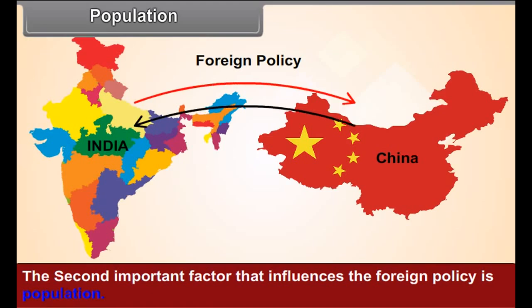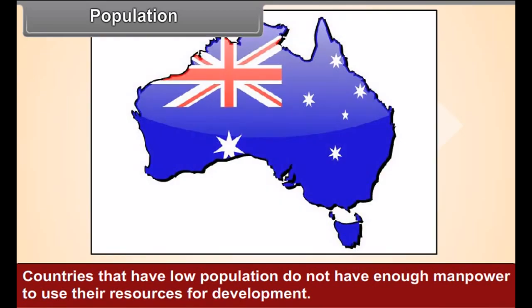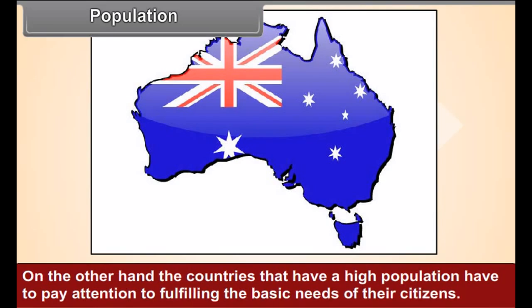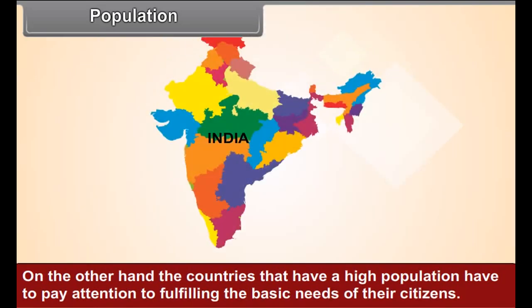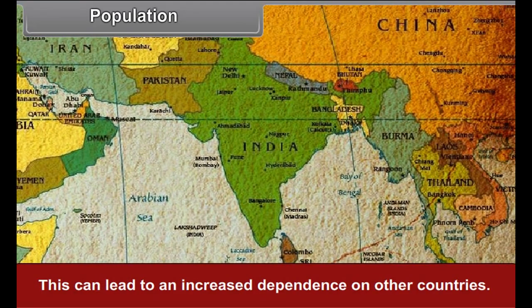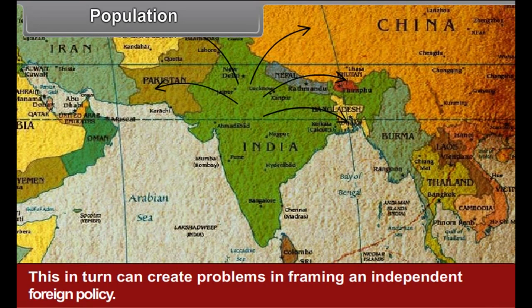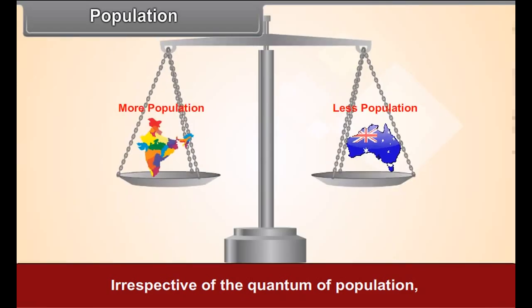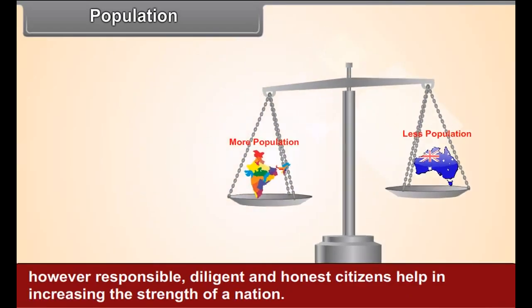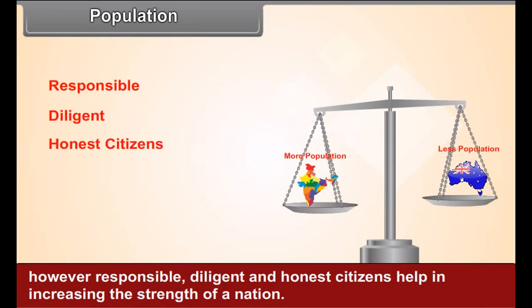Population: The second important factor that influences the foreign policy is population. Countries that have a low population do not have enough manpower to use their resources for development. On the other hand, countries that have a high population have to pay attention to fulfilling the basic needs of their citizens. This can lead to an increased dependence on other countries, which in turn can create problems in framing an independent foreign policy. Irrespective of the quantum of population, however, responsible, diligent, and honest citizens help in increasing the strength of a nation.